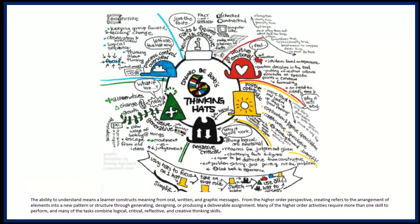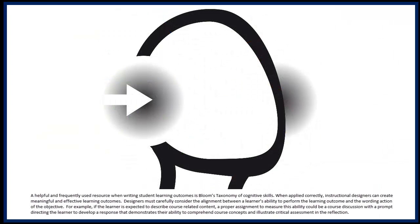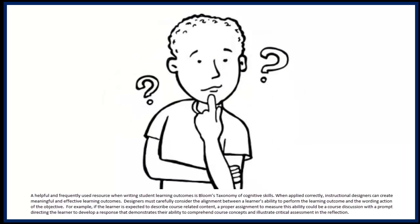Many of these higher order activities require more than one skill to perform, and many of the tasks combine logical, critical, reflective, and creative thinking skills. A helpful and frequently used resource when writing student learning outcomes is Bloom's taxonomy of cognitive skills. When applied correctly, instructional designers can create meaningful and effective learning outcomes. Designers must carefully consider the alignment between a learner's ability to perform the learning outcome and the wording action of the objective.